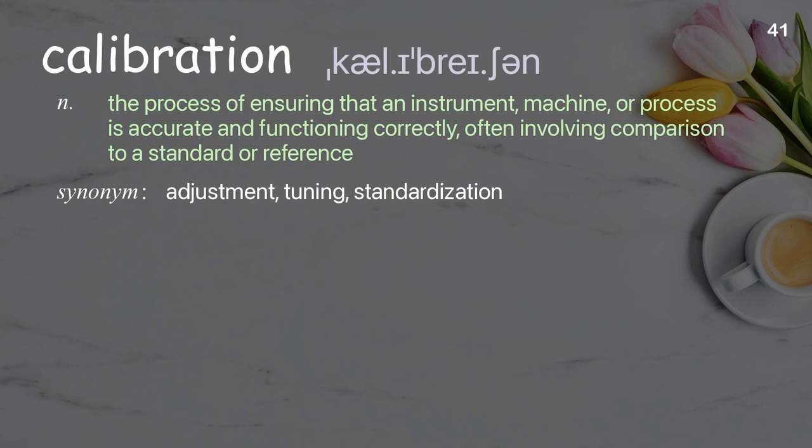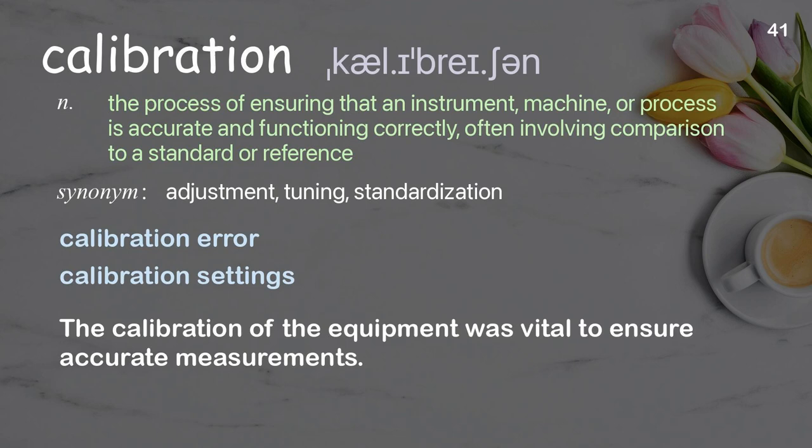Calibration: The process of ensuring that an instrument, machine, or process is accurate and functioning correctly, often involving comparison to a standard or reference. Examples: Calibration error, Calibration settings. The calibration of the equipment was vital to ensure accurate measurements.